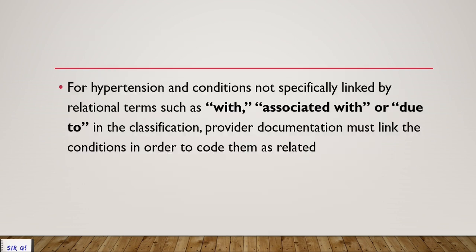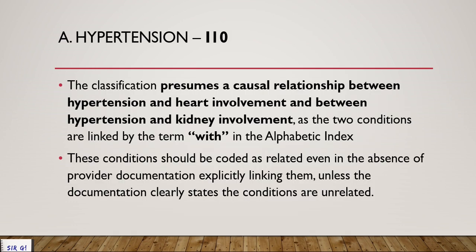For conditions not specifically linked by the relational term 'with,' 'associated with,' or 'due to' in the classification, provider documentation must link the conditions in order to code them as related. Not all heart diseases should be linked together automatically — you still need to check your index to see if it falls below the word 'with.' The common example from the guideline is heart involvement with hypertension and kidney involvement with hypertension.